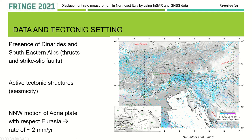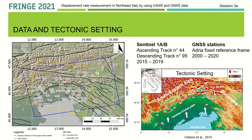The aim of the present study is to estimate the surface deformation of the area in relation to the active tectonic processes, in order to obtain useful information about seismogenic faults. For that reason, we processed more than 400 SAR images acquired by Sentinel-1 A/B satellites along ascending and descending tracks, starting from 2015 to 2019.